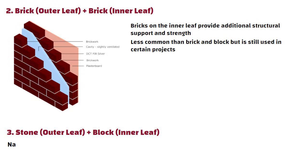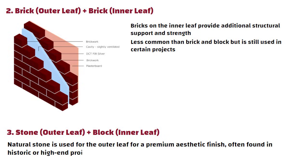Stone plus block: Natural stone is used for the outer leaf for a premium aesthetic finish, often found in historic or high-end projects.